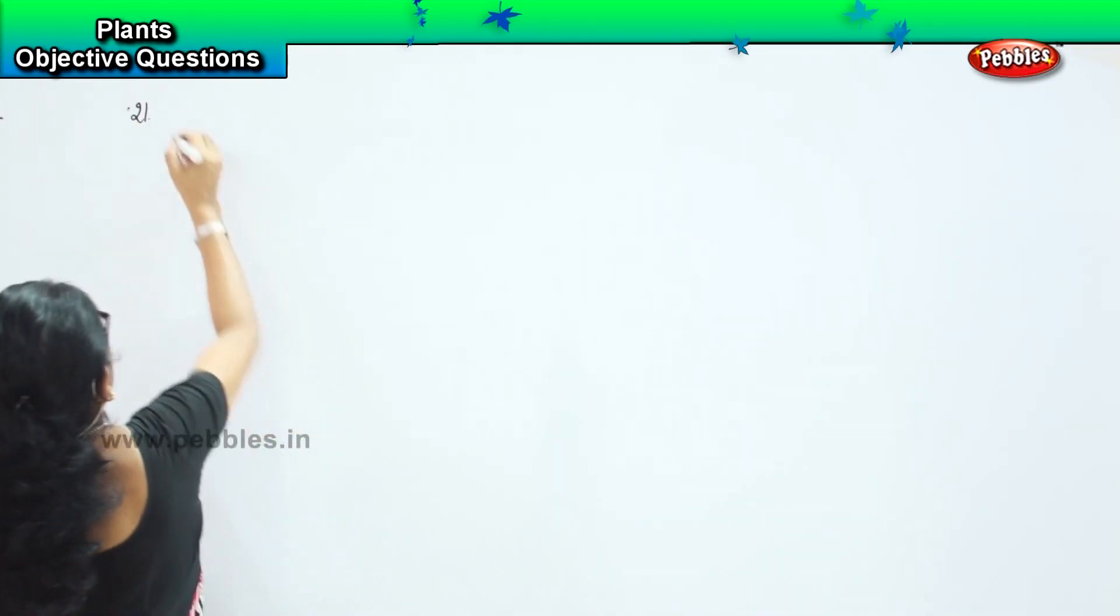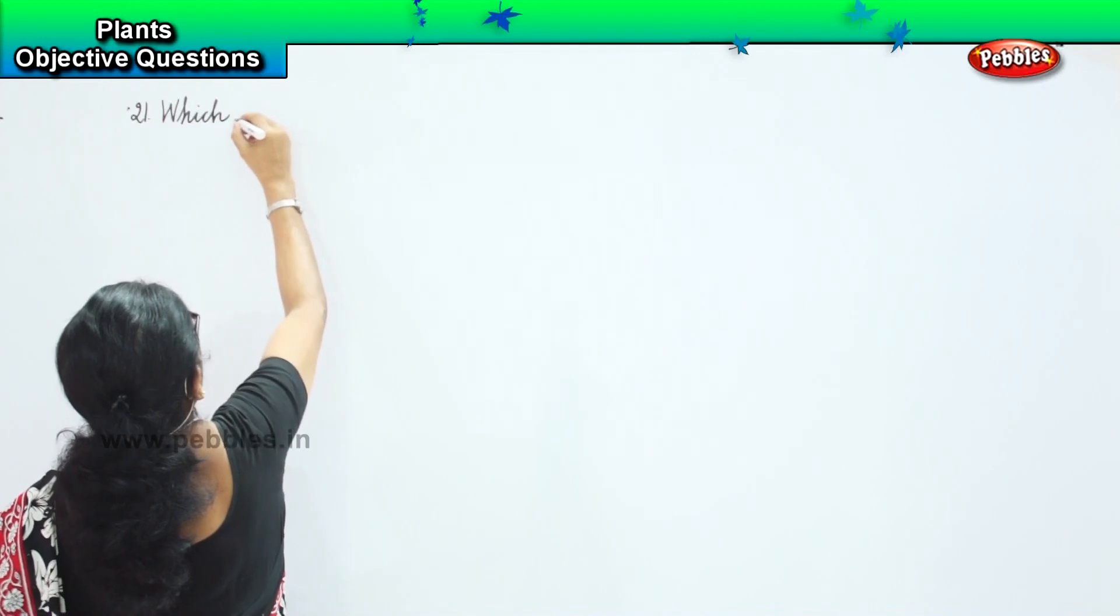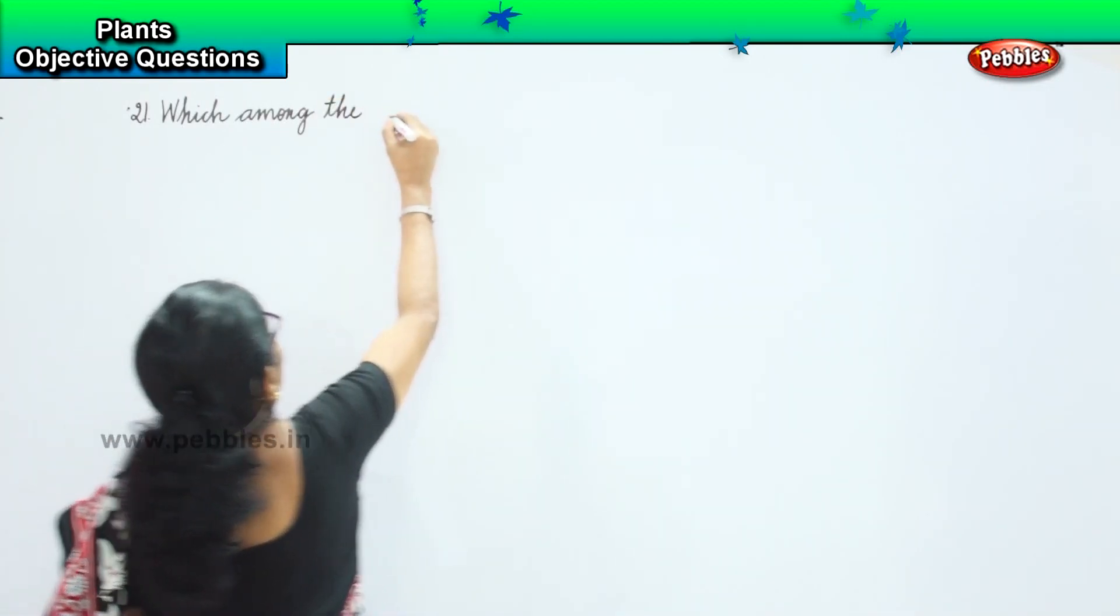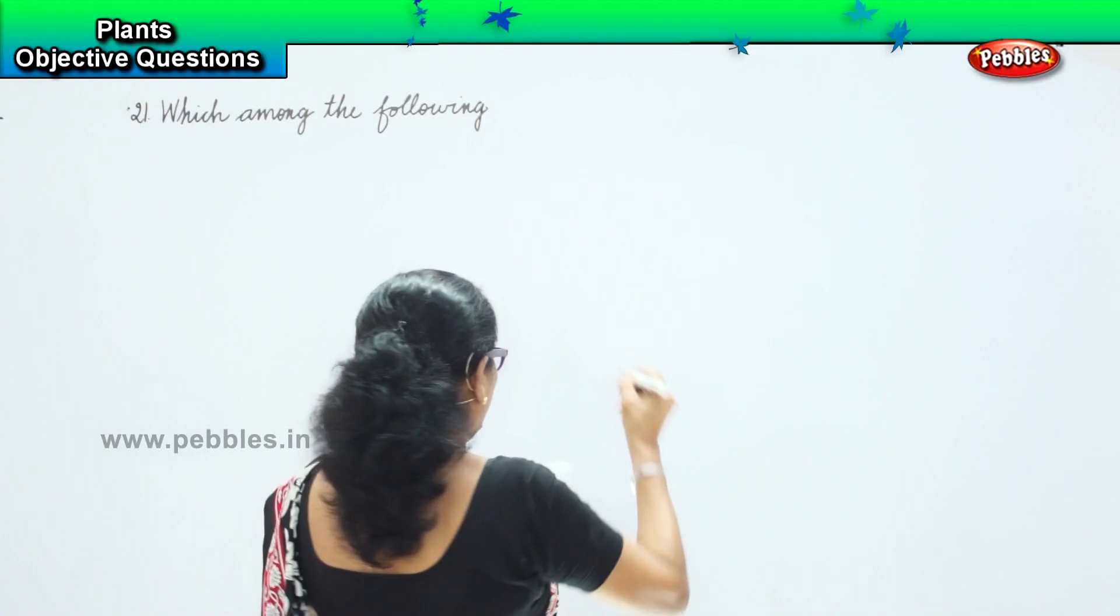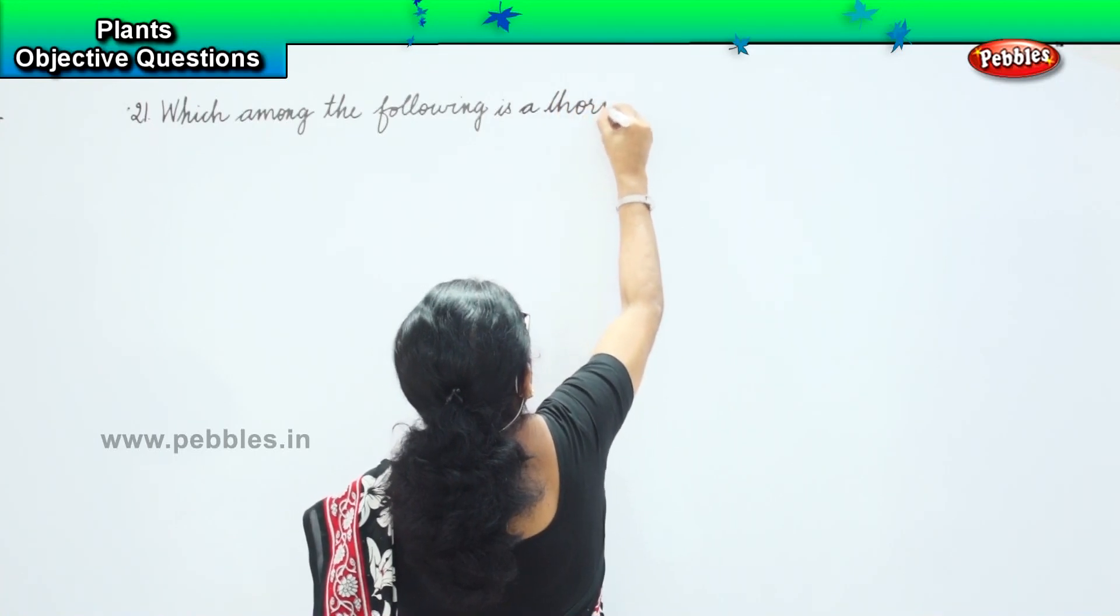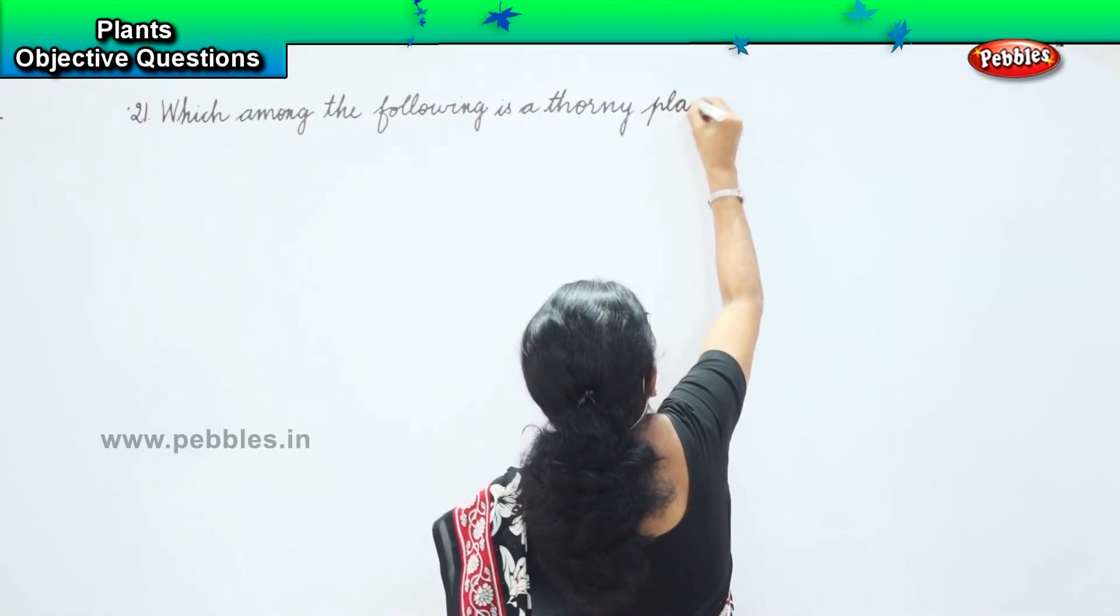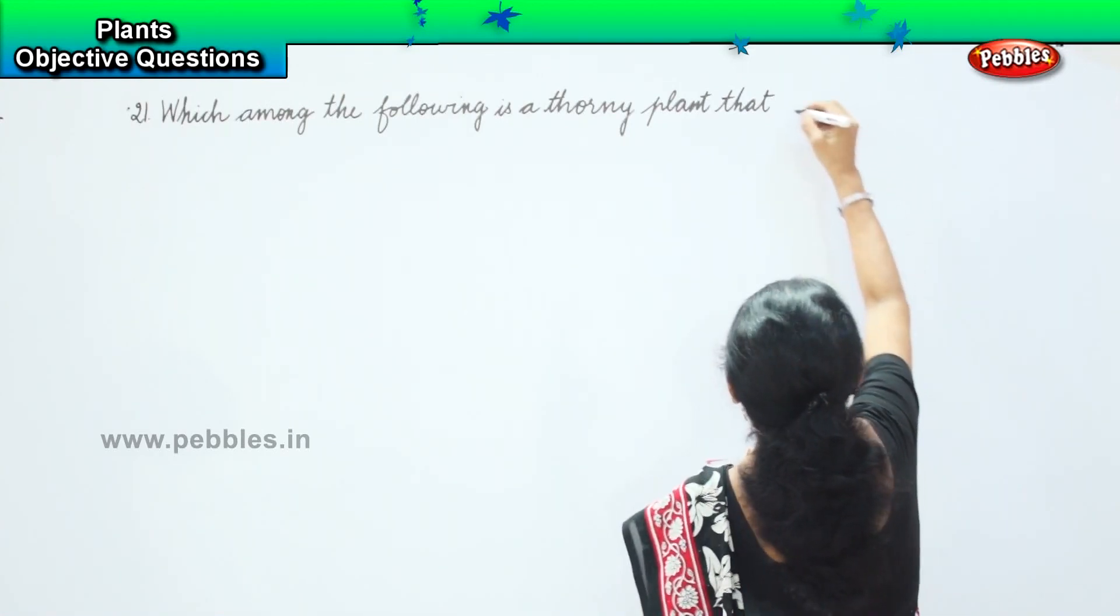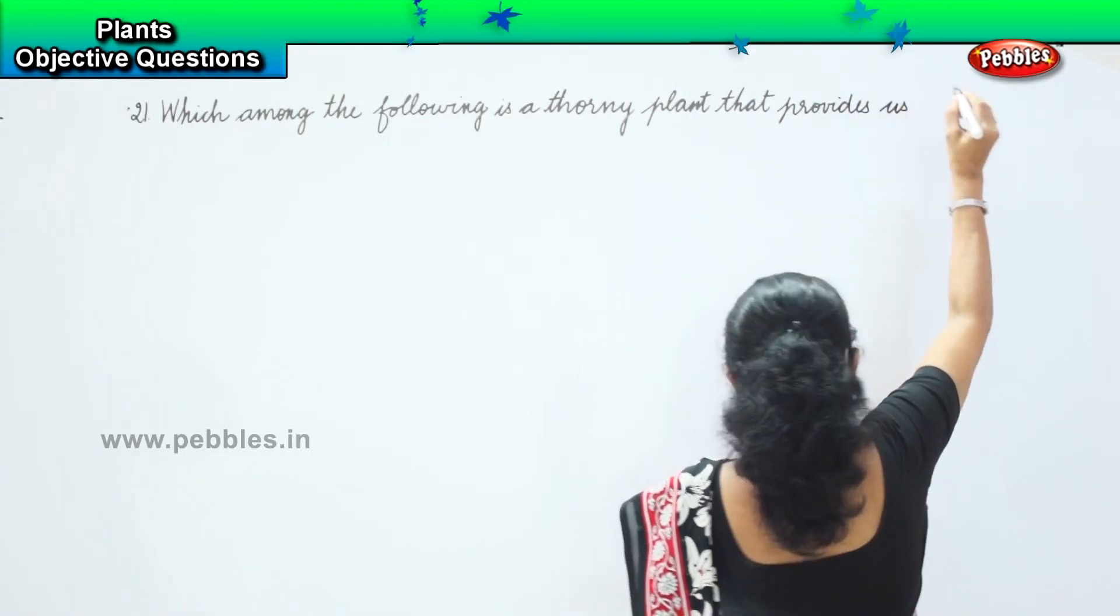Which among the following is a thorny plant that provides us perfume?